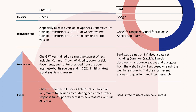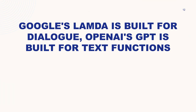I got access to Bard, so I decided to do a little digging to see how it stacks up against ChatGPT and what the main differences are between the two chatbots. At a base level, both chatbots use natural language processing, which means users key in a prompt or query and the chatbots generate a human-like response.